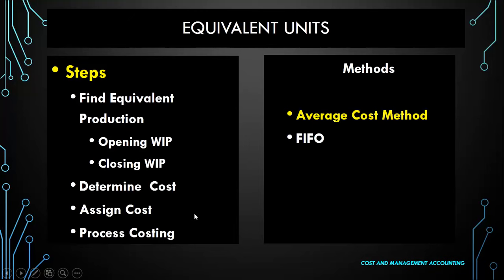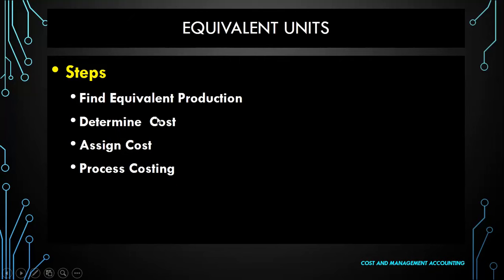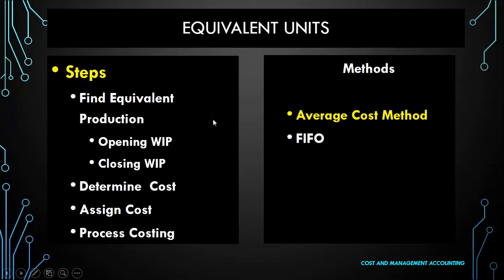Whenever there are equivalent units or work in progress, we find the equivalent output, determine the cost per unit, assign the cost, and then do the process costing. There is a decision to be made with respect to opening and closing work in progress: to use either the average costing method or first in first out. In this example, we will focus on the FIFO method.